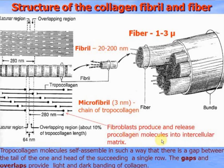Initially, fibroblasts produce and release procollagen molecules into the intercellular matrix. They are converted to tropocollagen, and these tropocollagen molecules self-assemble in such a way that there is a gap between one tail and the head of the next molecule. The gaps and overlaps provide the light and dark banding of collagen.